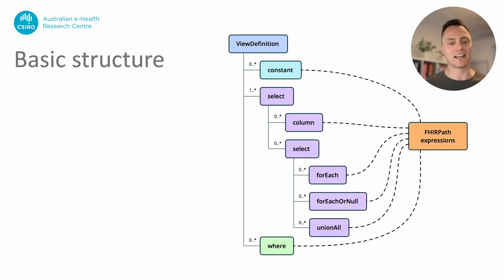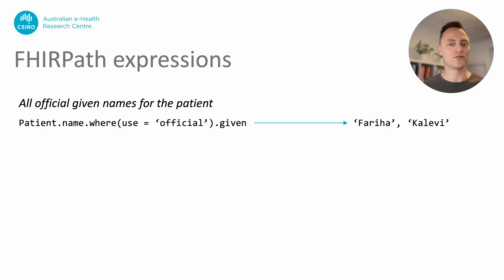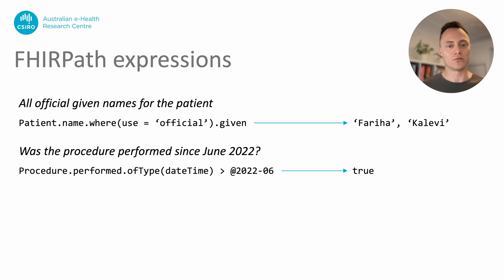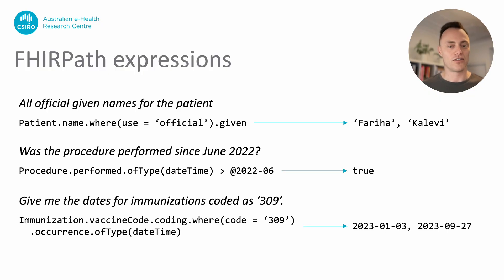Each of these parts of the view definition is defined using a FHIRPath expression. FHIRPath is an easy way to select values out of a FHIR resource by describing a path through the data structure. The best way to show how useful FHIRPath can be is to provide a few examples. The first example shows a FHIRPath expression that is extracting the first names for a patient. The WHERE function is used to filter the names to only those with a use code of official. The second example determines whether a procedure was performed after a particular date. The third example selects an immunisation record based upon its code and then extracts the date of administration.